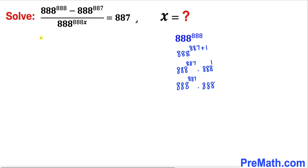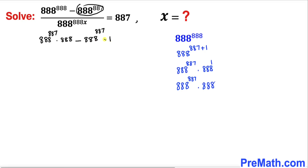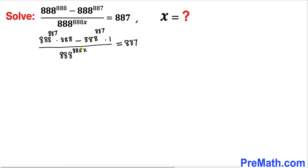Therefore we can write this as 888^887 times 888, minus 888^887 times 1 — which doesn't make any difference — divided by 888^888 times x, equals to 887 on the right-hand side.